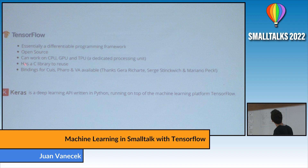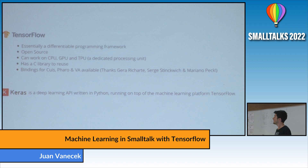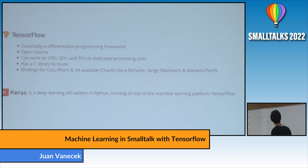TensorFlow has bindings available for Pharo, Squeak, and VA Smalltalk — a key feature. Thanks to Gerard Ricciarte, Serge Stinckwich, and Mariano Peck for writing the bindings for each dialect. Keras, for example, uses TensorFlow and is a deep learning API written in Python that helps you build and train neural networks. We're going to build something very similar to Keras in Smalltalk.